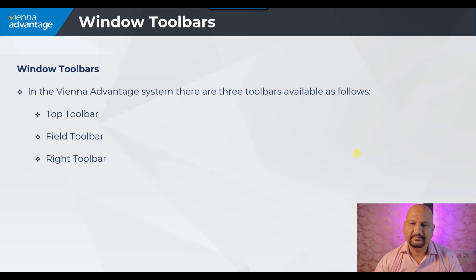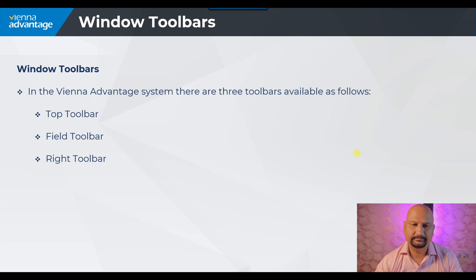In the VA system there are three toolbars available: the top toolbar, the field toolbar, and the right toolbar.